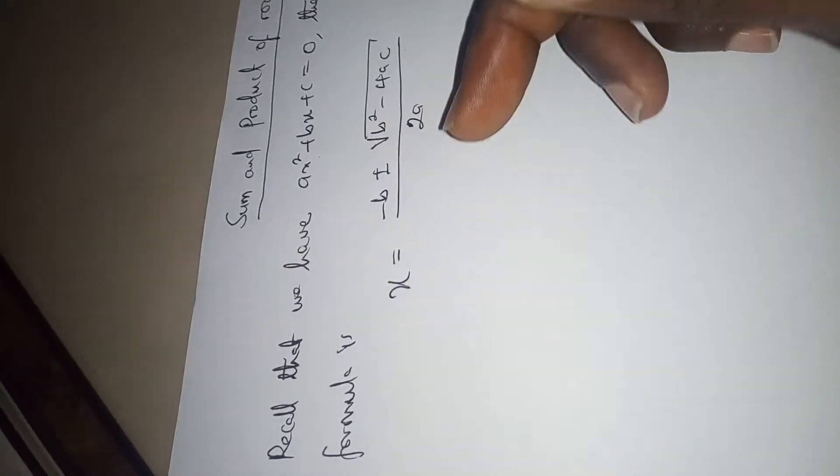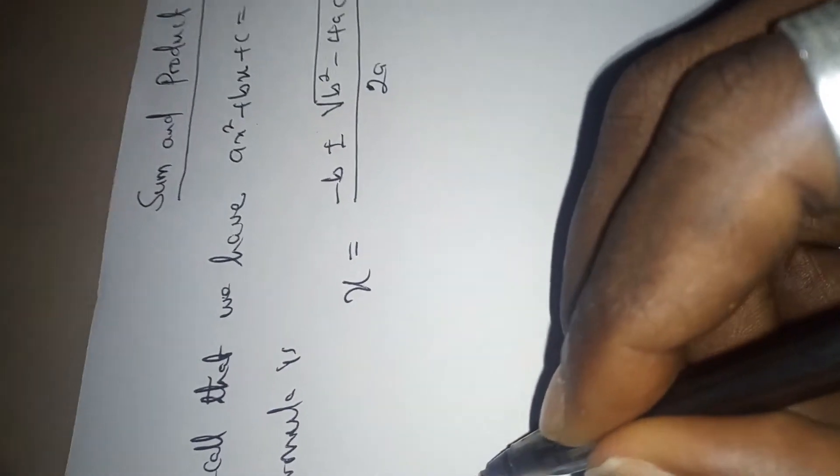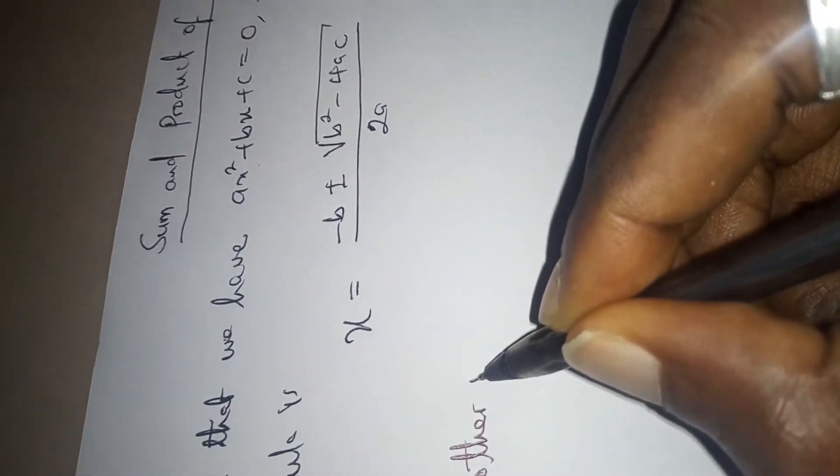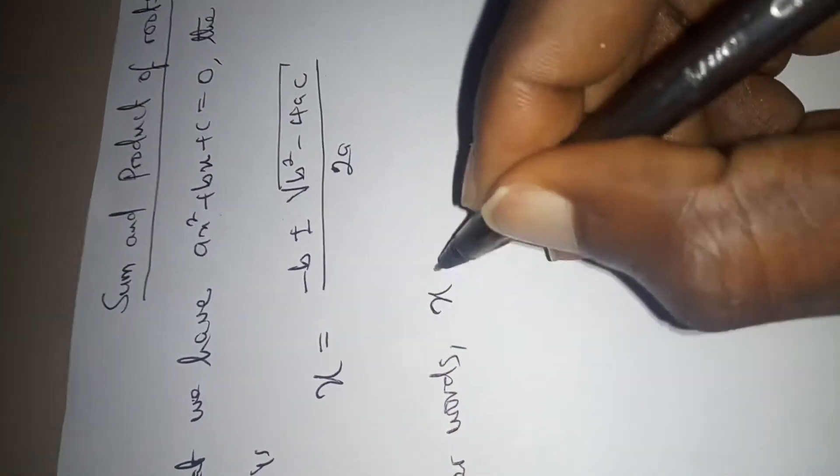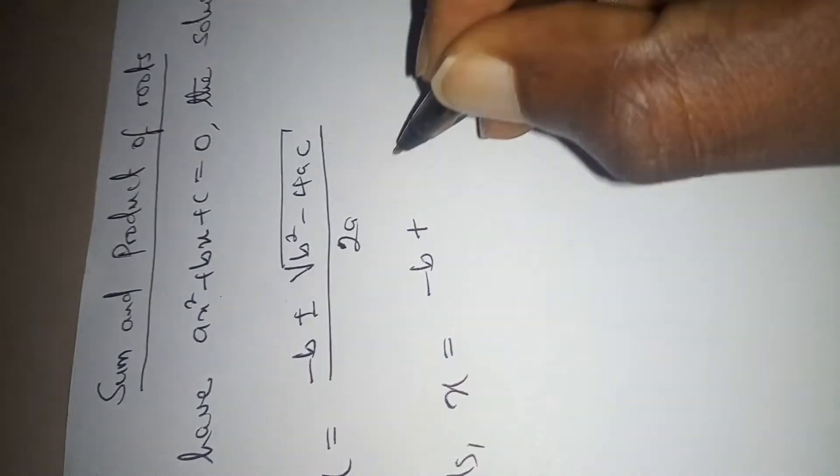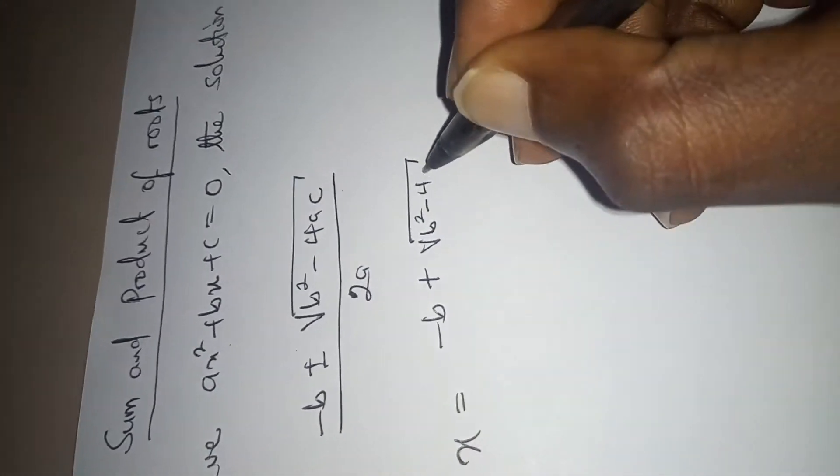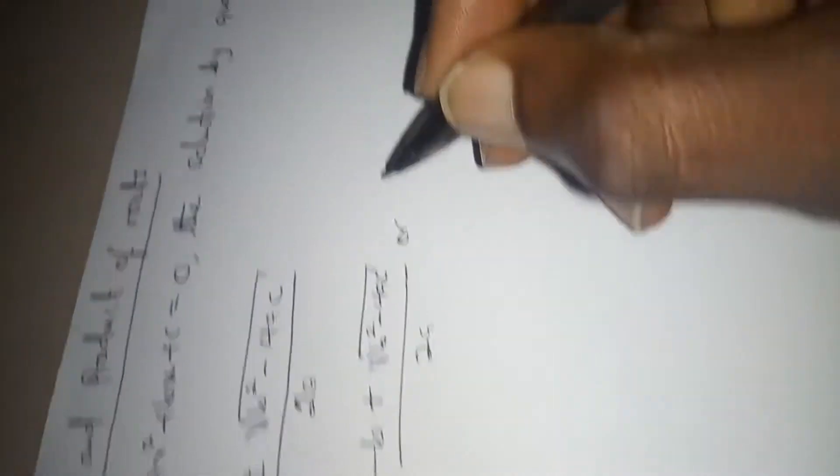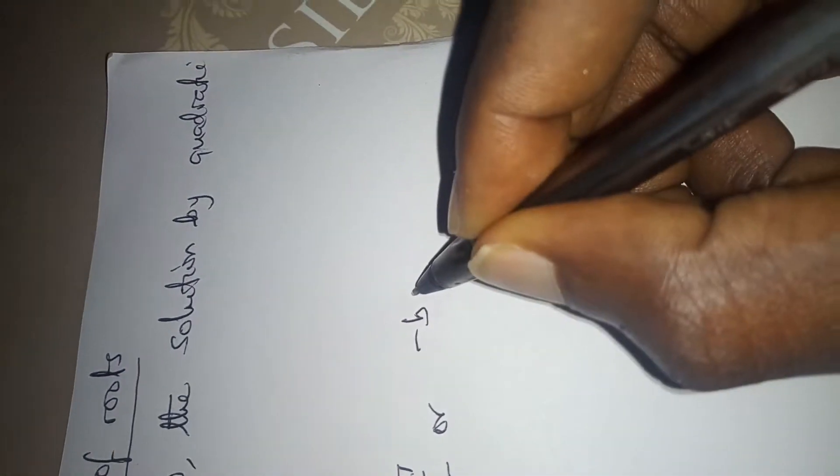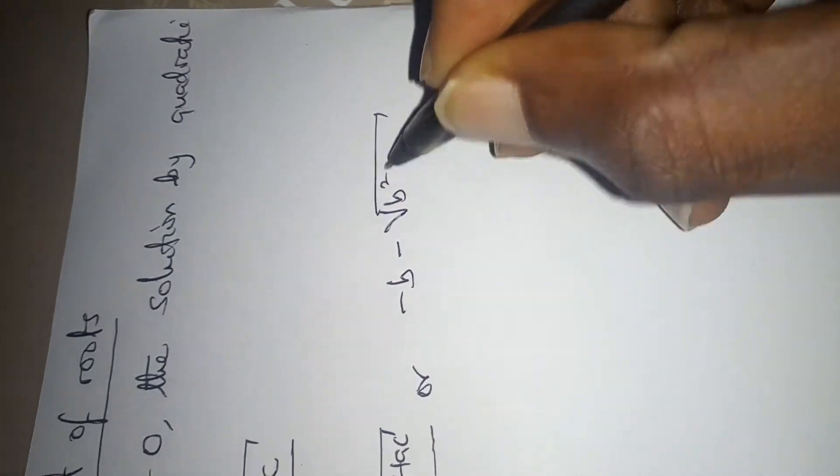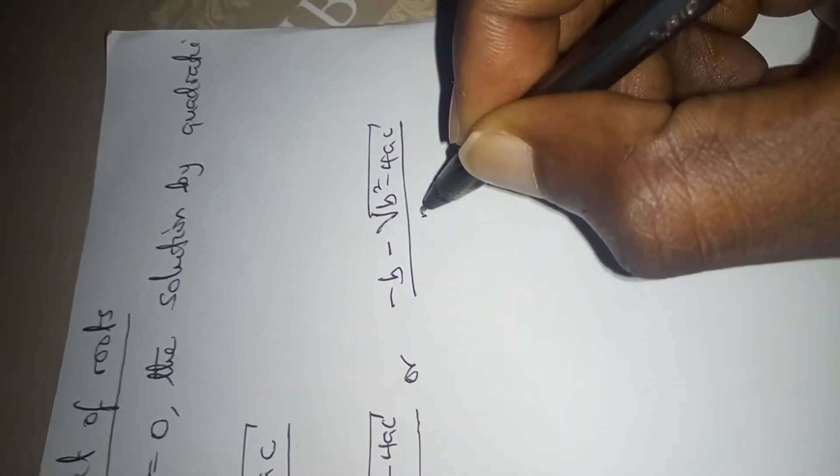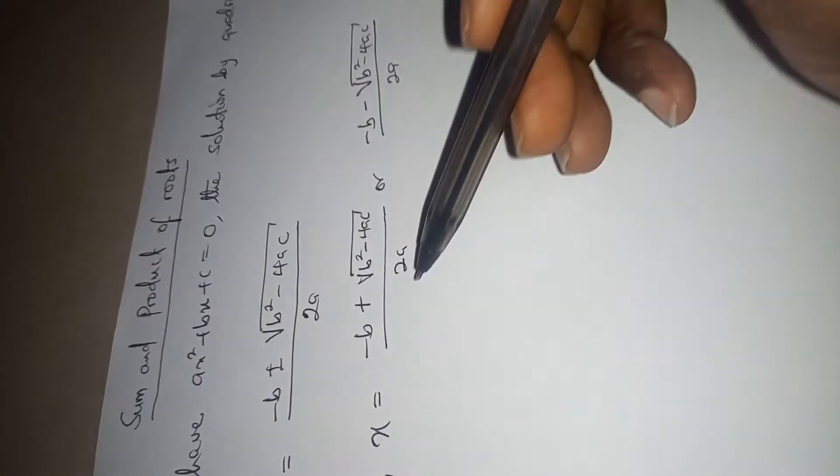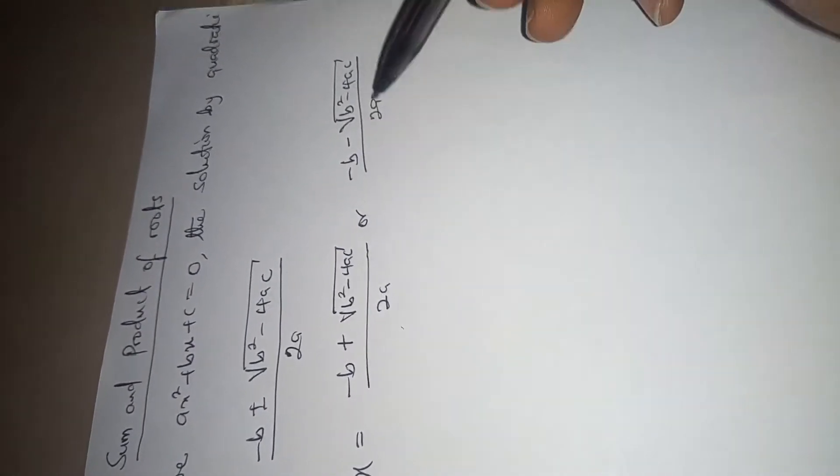So this means for any quadratic equation of this form, the solution can either be, in other words, X equals minus B plus square root of B squared minus 4AC over 2A, or minus B minus square root of B squared minus 4AC over 2A. So when you solve a quadratic equation of this form, you are expected to have any of these two solutions.